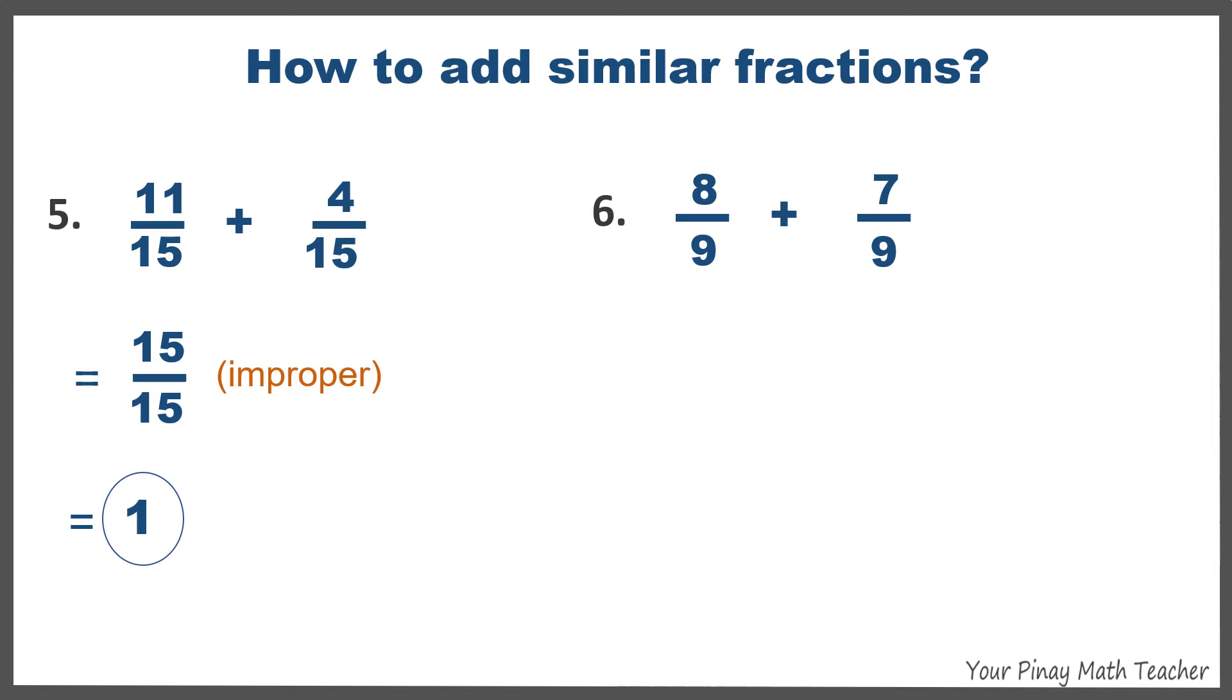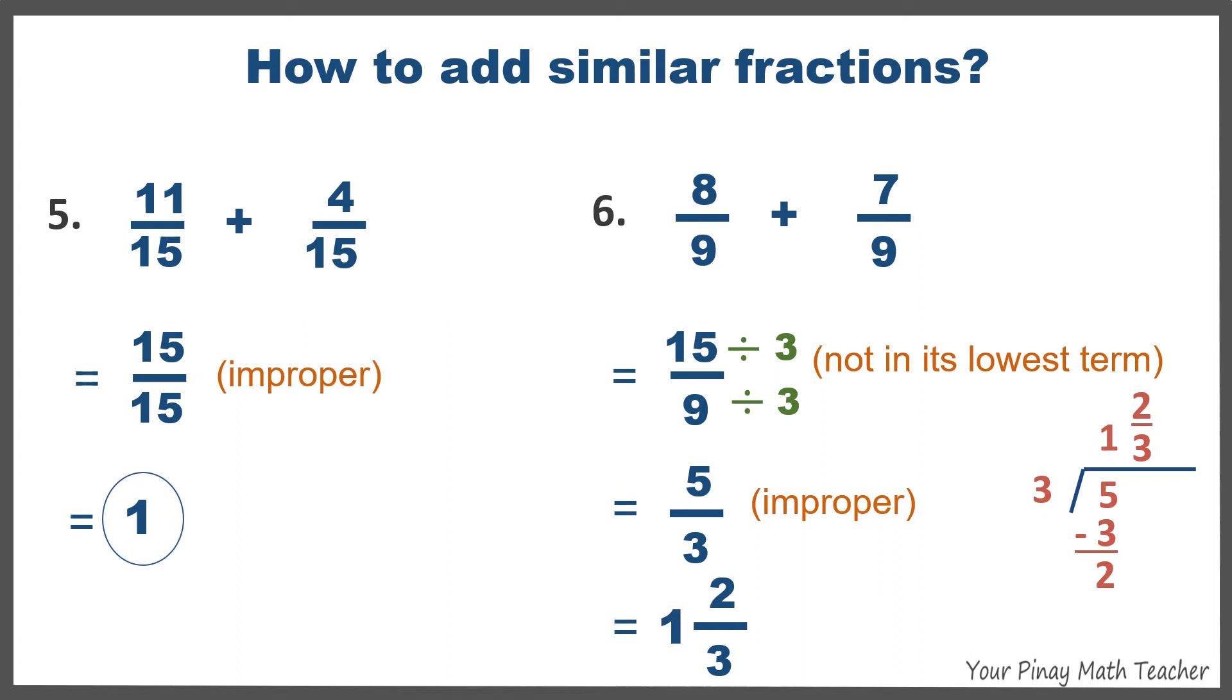Number six, 8 ninths plus 7 ninths is equal to 15 ninths, which can still be reduced by 3. So, the reduced form is 5 thirds, which is an improper fraction that can still be changed to a mixed number. By dividing 5 by 3, it gives us 1 and 2 thirds. So, 5 thirds is equivalent to 1 and 2 thirds, which is considered as the final answer for this item because 2 thirds is already a proper fraction and it is in its lowest term.